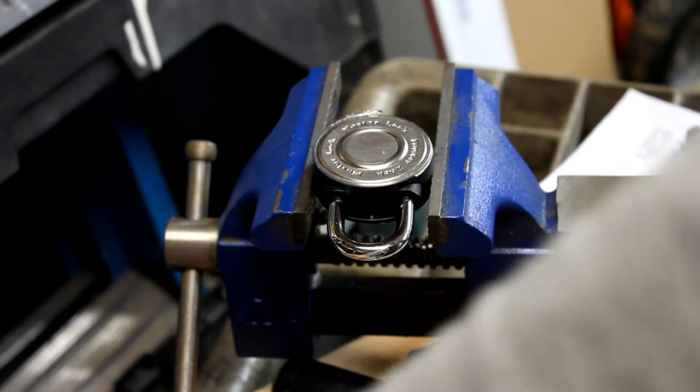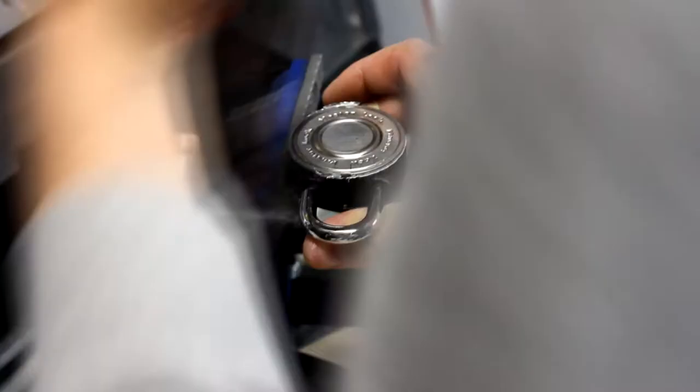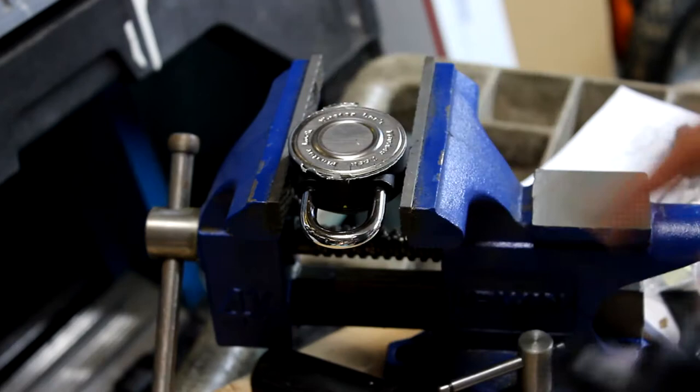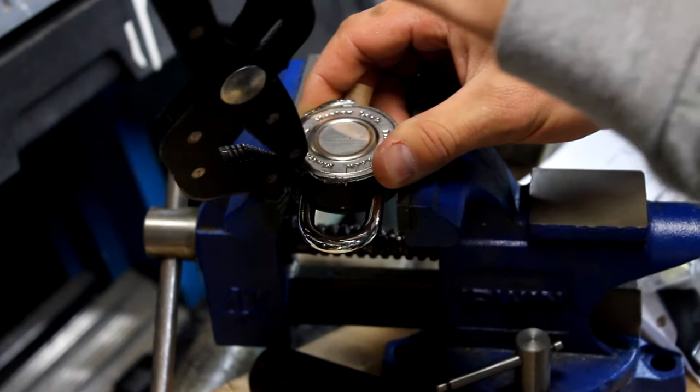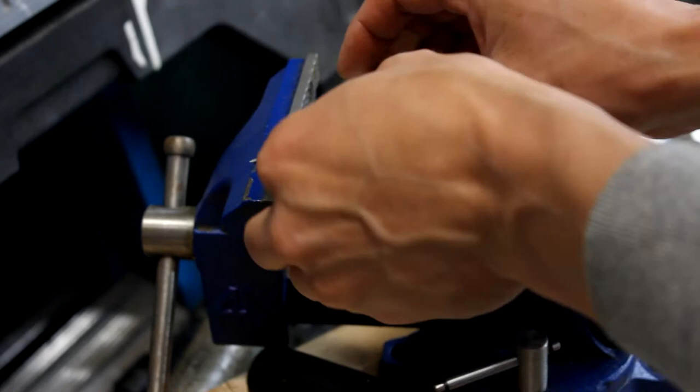So basically I got it locked in the vise here, just going around the edge. You can see I'm just peeling the outer edge here. So we got this back plate here.